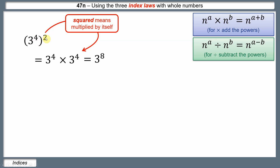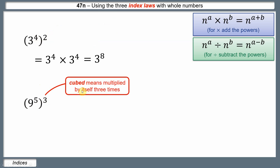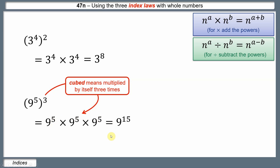Let's look at a second example with a power inside and outside a bracket: 9 to the power of 5, and then cubed. Cubing means multiplied by itself three times, so we have 9 to the power of 5, times itself, times itself. Applying the multiplying law, we add the powers: 5 plus 5 plus 5 gives 9 to the power of 15. We had the power of 5 three times, giving 3 times 5 equals 15.